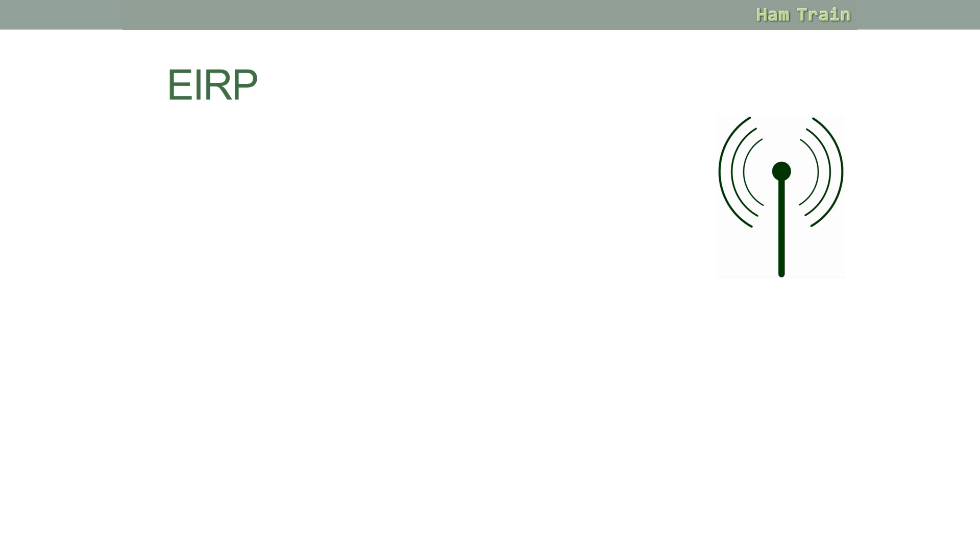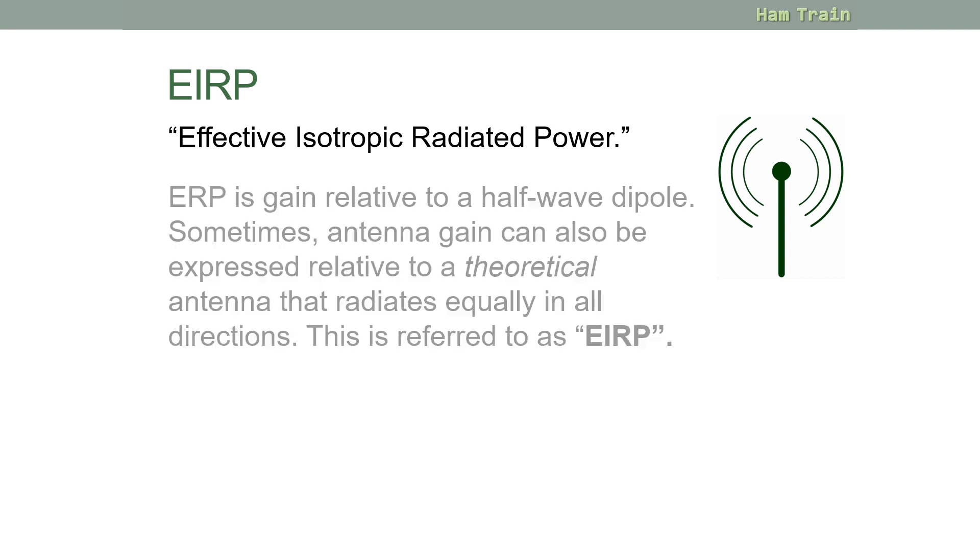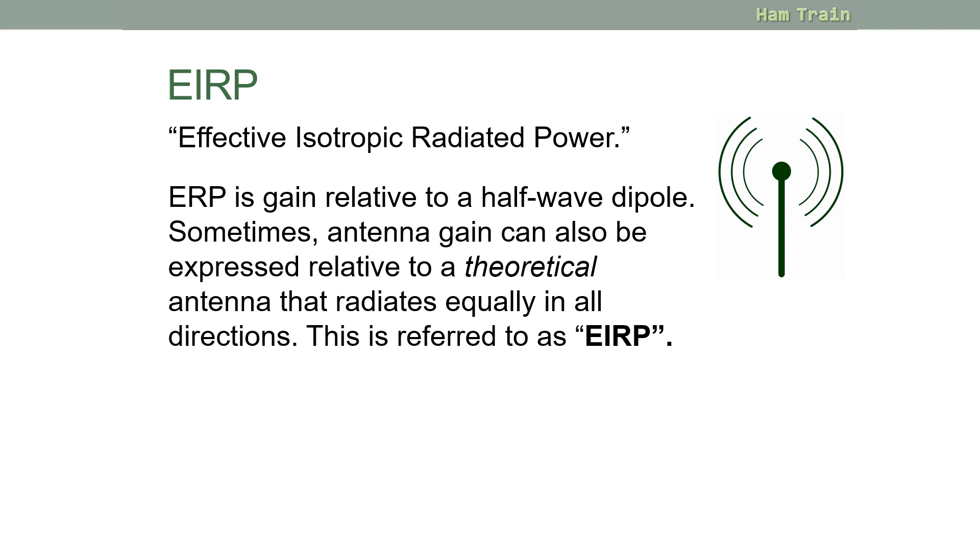That was ERP, we now look at something called EIRP, which stands for Effective Isotropic Radiated Power. As we said on the last couple of slides, ERP is antenna gain relative to a half-wave dipole. Sometimes however, you can find that gain is expressed in a different way, using EIRP. EIRP stands for Effective Isotropic Radiated Power, and it's a theoretical antenna that doesn't really exist other than in computer modelling. It's an antenna that radiates equally in all directions. You'll often find antenna manufacturers use this, because it shows a better result than just plain old ERP.